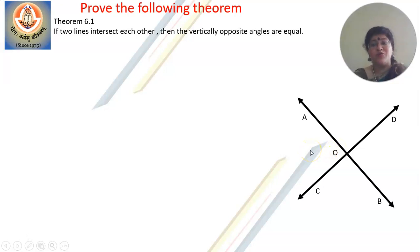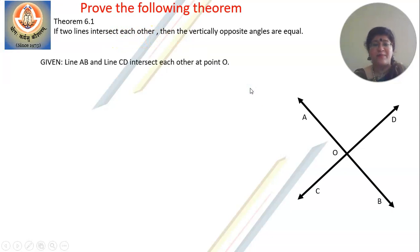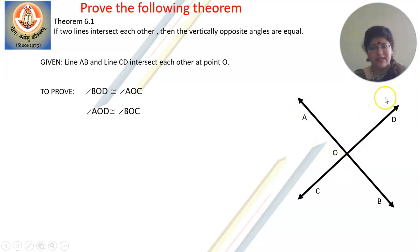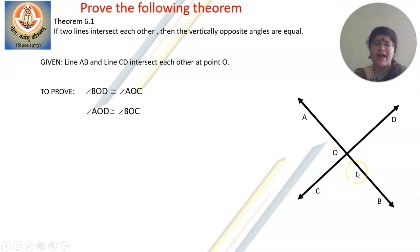Now, what is it that you need to prove, and what is given? According to this information, it is given that line AB intersects line CD at point O. To prove: the vertically opposite angles are congruent. Take the vertically opposite angles — angle AOD is vertically opposite to angle BOC, so you need to prove angle AOD equals angle BOC. And at the same time, angle AOC is equal to angle BOD.